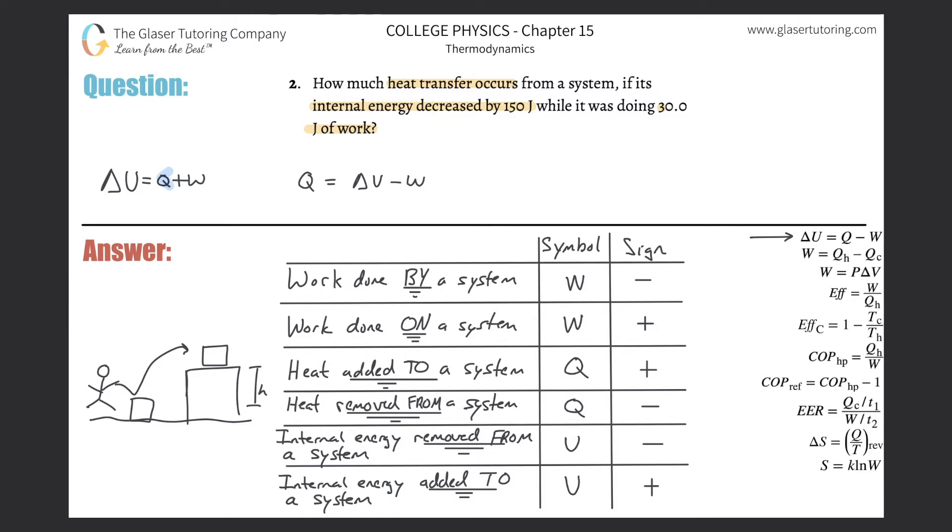Now that being the case, I can simply now plug in my values, but you got to be careful with the signs. So the change in internal energy, they said that the internal energy decreased, right? So it sounds like internal energy is being removed from the system. So therefore the value of that should be negative 150 and then it's minus now the work. Well, it says while it, meaning the system, while the system was doing 30 joules of work. Does that sound like work is being done by the system or does it sound like work is done on the system? Well, it sounds to me like work is being done by the system, right? So the sign should be negative. So I'm going to plug in now here, negative 30.